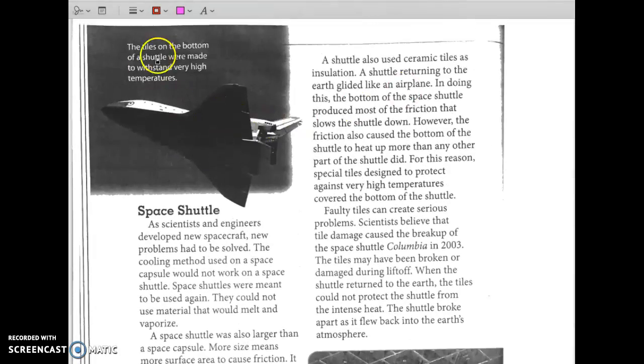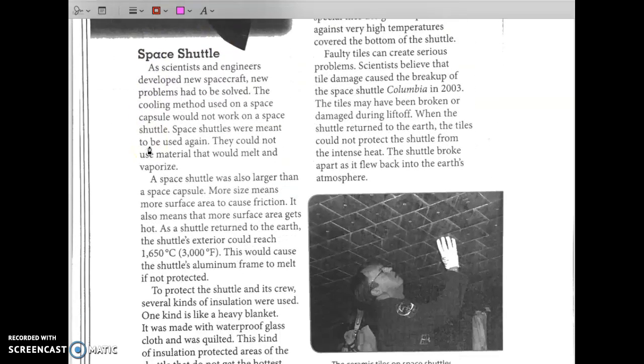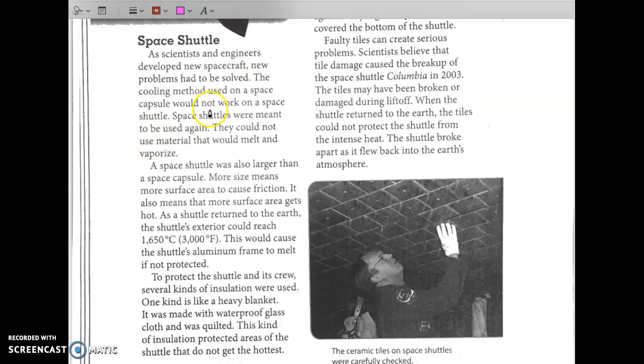Space shuttles. These are space shuttles. As scientists and engineers developed new spacecraft, new problems had to be solved. The cooling method used on a space capsule would not work on a space shuttle. Space shuttles were meant to be used again. They could not use material that would melt and vaporize. So they needed a different strategy to cool down space shuttles. What could it be?